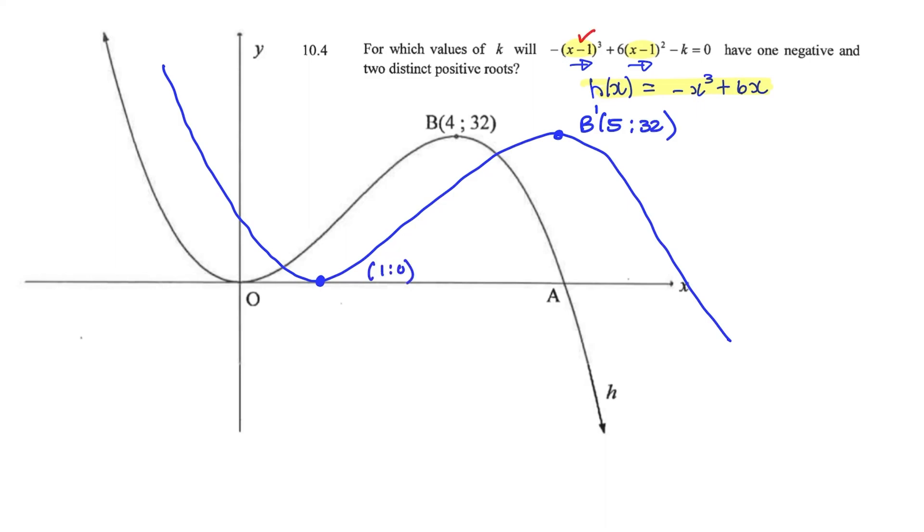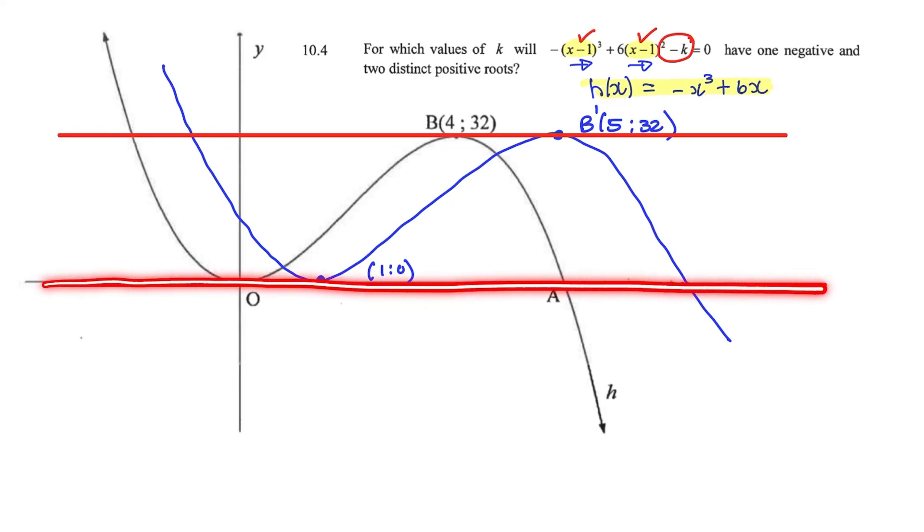And this intercept would now be at (1, 0). So that's the first thing. It's shifted to the right by one unit. What we want to do is imagine that we can shift the graph by k up and down. The easiest way to illustrate that is to draw in horizontal lines around the turning points, or at the turning points.